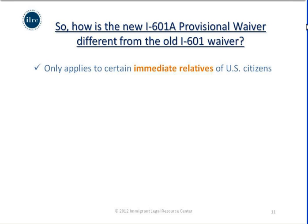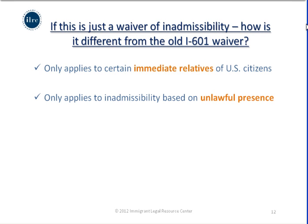The first big difference is that this waiver process — filing a waiver before leaving the United States — is only available for immediate relatives of United States citizens. Those with a family petition based on a permanent resident family member cannot use this process. If they need an unlawful presence waiver, they will still need to use the traditional filing of an I-601 after attending a consular interview. Additionally, it only applies for inadmissibility based on unlawful presence.